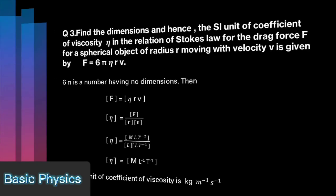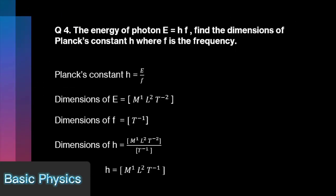The energy of photon E is equal to h into f. Find the dimensions of Planck constant h, where f be its frequency. Planck's constant h is equal to E by f. Put dimensions of energy and frequency. The dimensions of h is [M L^2 T^-1].